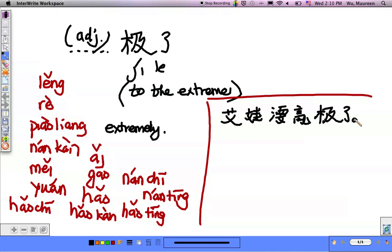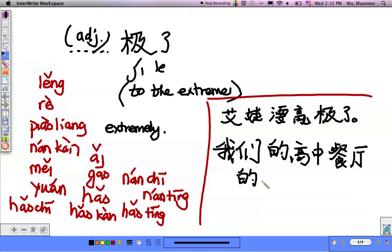How would I say our school's cafeteria food? Extremely bad tasting. Okay, 我们的高中, we could say our high schools. 餐厅很好, 我们的餐厅的饭难吃几了.